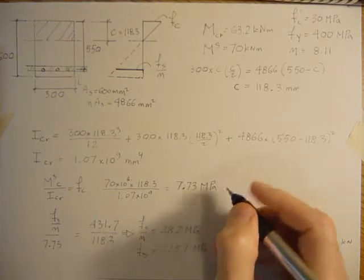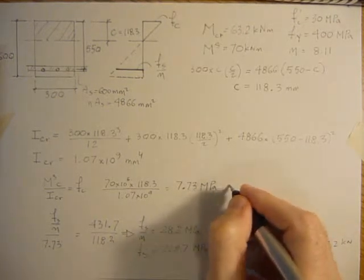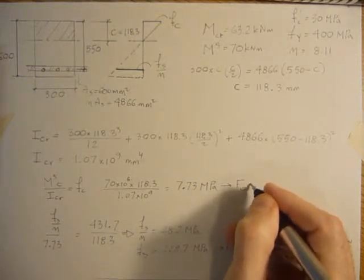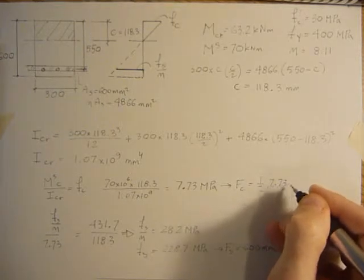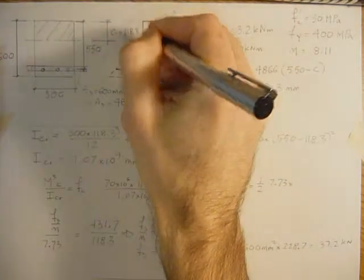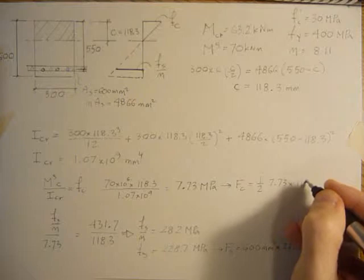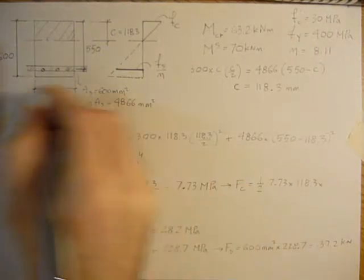And then if we do the same thing for force in the concrete, we would get one half of the stress, 7.73 times the 118.3, times the width of the section 300.